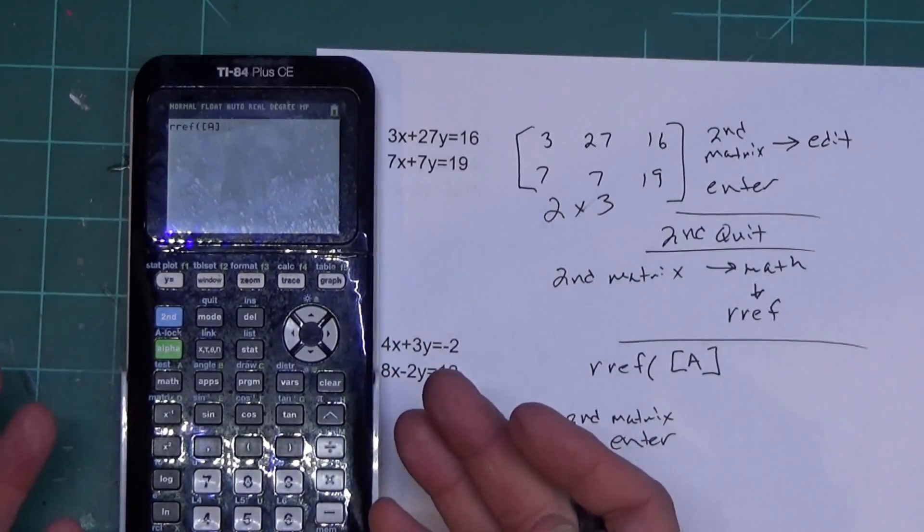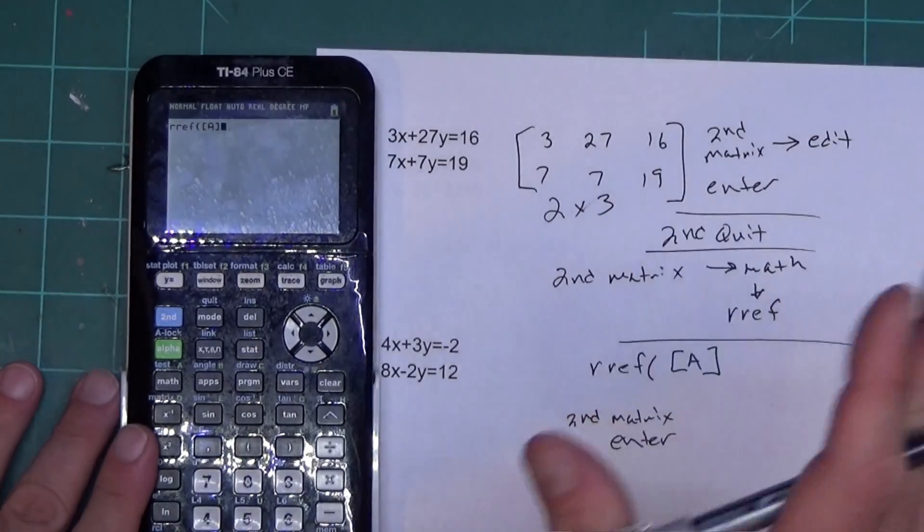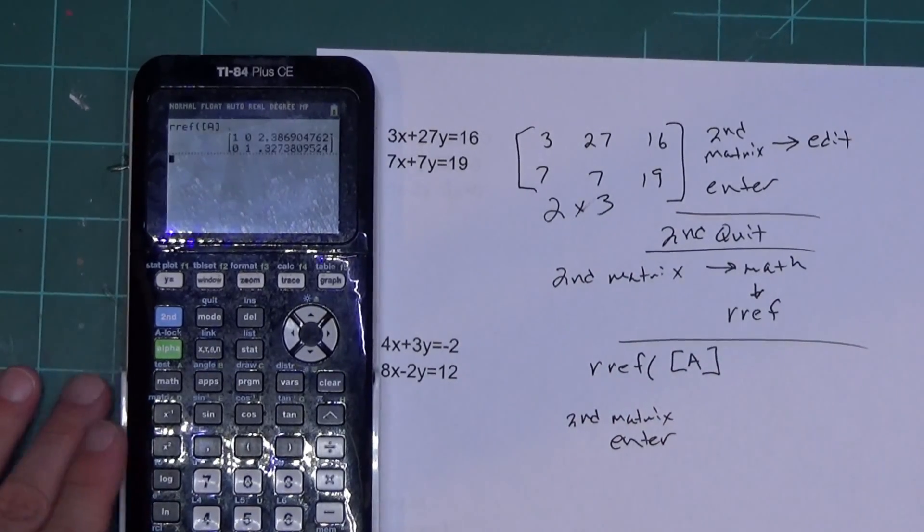And then just press enter. Because when we press enter it will tell the calculator use matrix A. I'm pressing enter on A because that's where I typed everything. If I typed it matrix B, I would have went down to B and press enter. Now when you press enter it solves it.